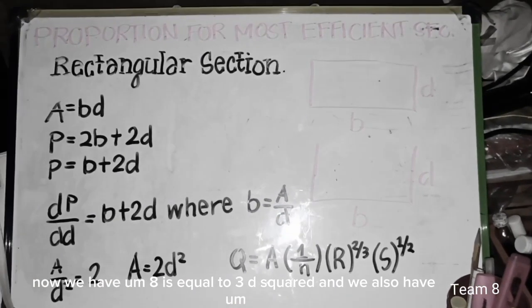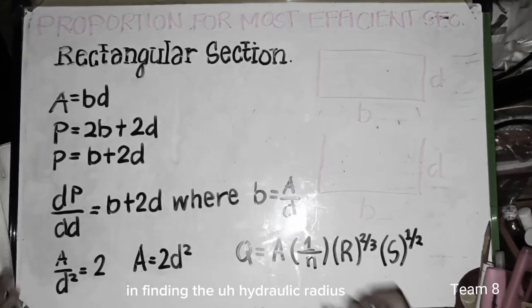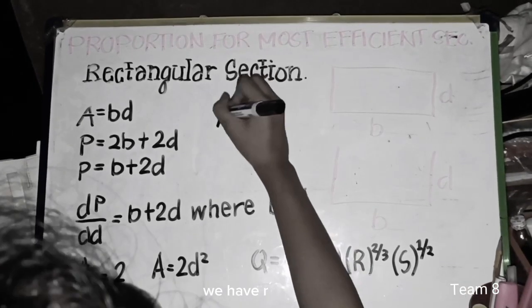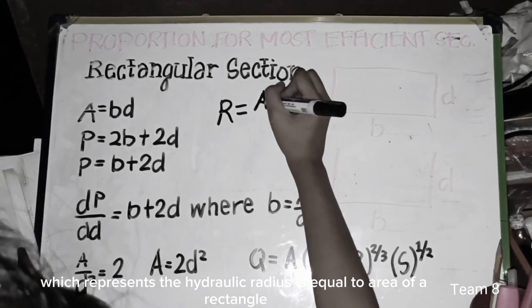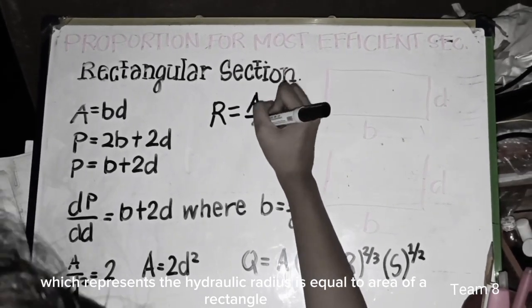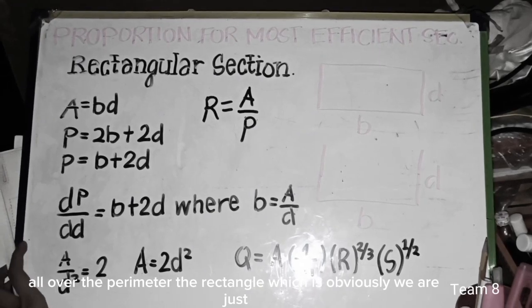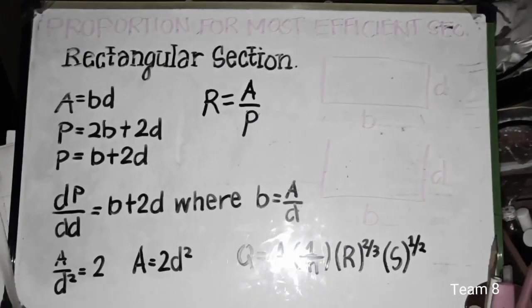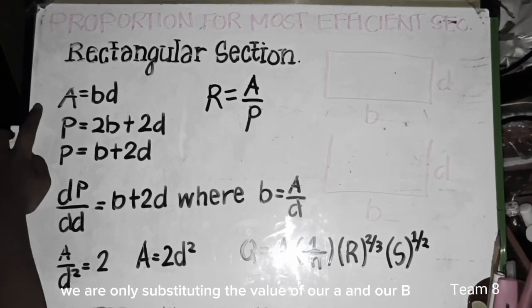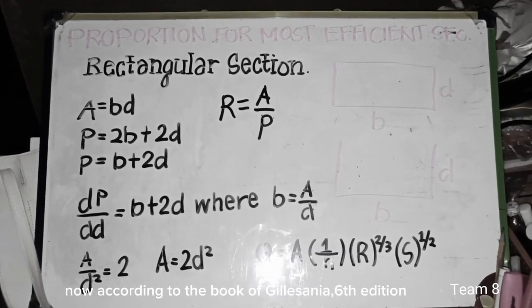And we also have hydraulic radius. In finding the hydraulic radius, we have R, which represents the hydraulic radius, is equal to area of a rectangle all over the perimeter of the rectangle. Which is obviously, we are only substituting the value of our A and our P.